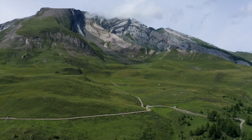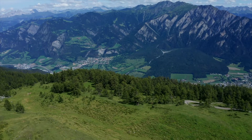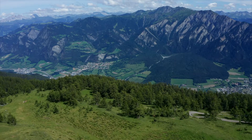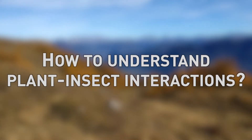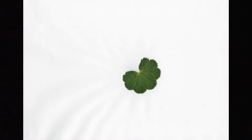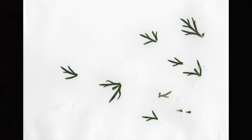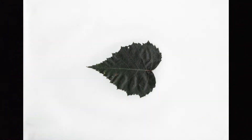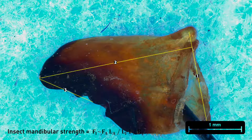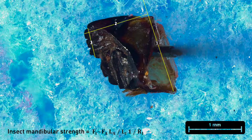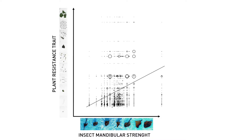This can be done by testing the match between plant and insect functional traits at both mechanical and chemical levels. To test this relationship at the mechanical level, we measure different plant functional traits associated with leaf structural resistance and we quantify grasshopper mandibular strength. Finally, we evaluate the matching of the traits and how this relates to the insect diet.